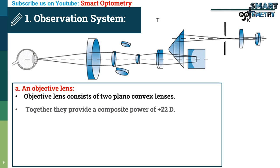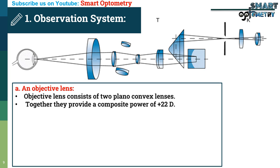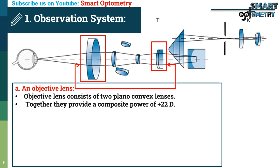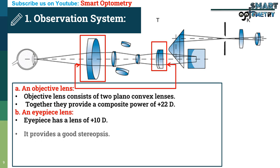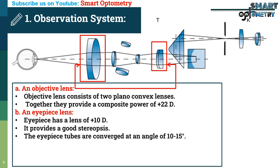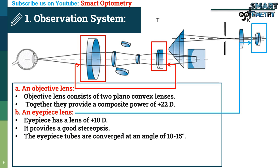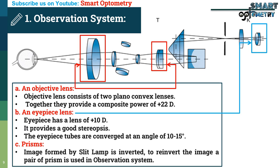Observation System: The observation system is essentially a compound microscope which consists of an objective lens, an eyepiece lens, and prisms. The objective lens consists of two plano-convex lenses which together provide a composite power of plus 22 diopters. The eyepiece lens is plus 10 diopters and provides good stereopsis while examining the patient's eyes. The eyepiece tubes are converged at an angle of 10 to 15 degrees. The image formed by the slit lamp is inverted, and to re-invert the image, a pair of prisms is used in the observation system.